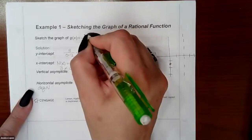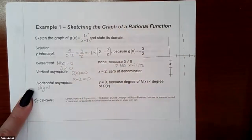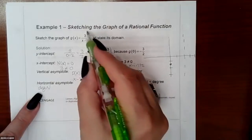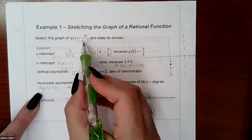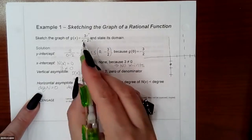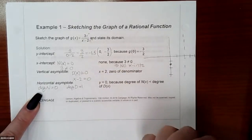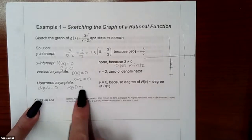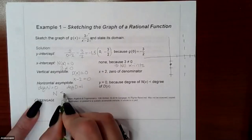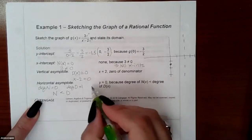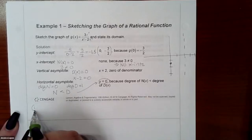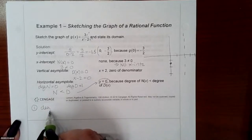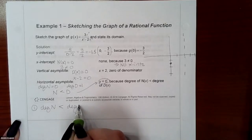For the vertical asymptote, set the denominator equal to zero: x − 2 = 0, so x = 2. For the horizontal asymptote, compare degrees. The numerator can be written as x to the zero power; the denominator has degree one. Since the numerator's degree is less than the denominator's degree, there is automatically a horizontal asymptote at y = 0.